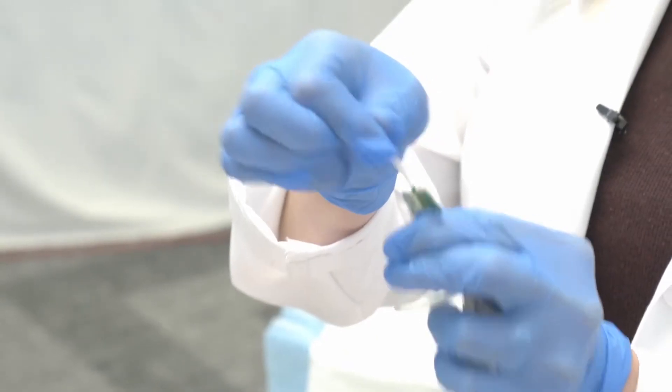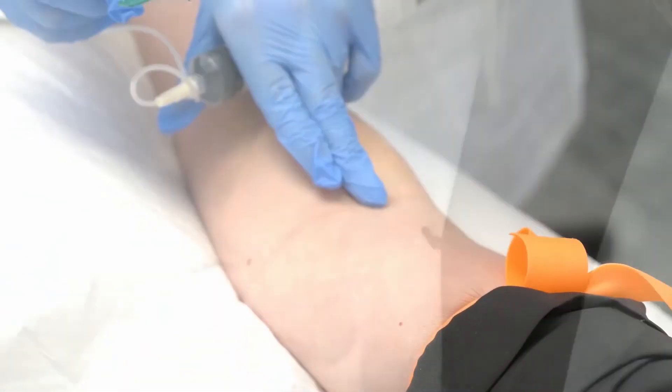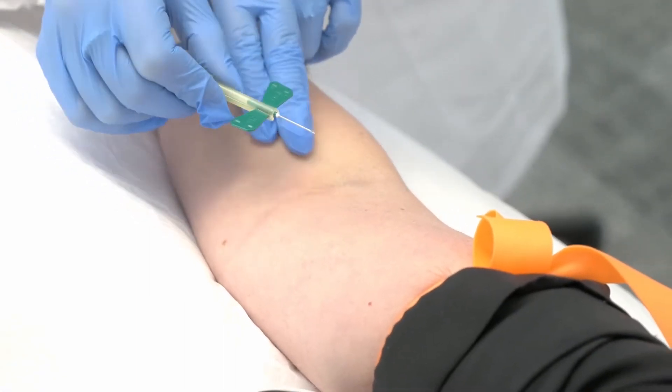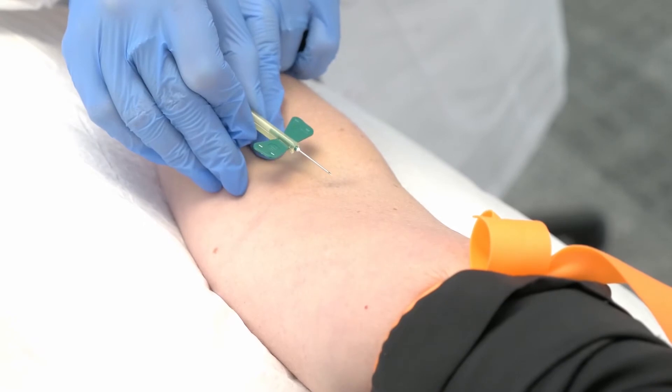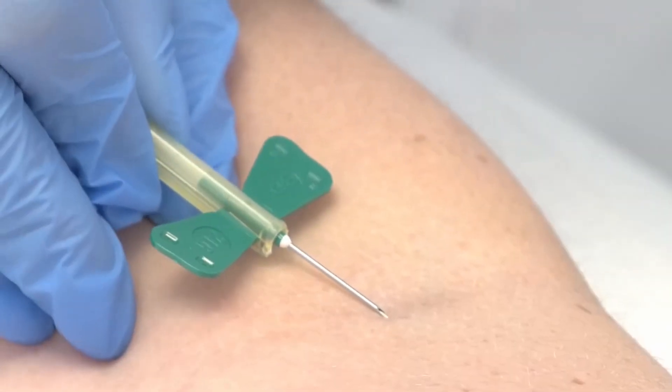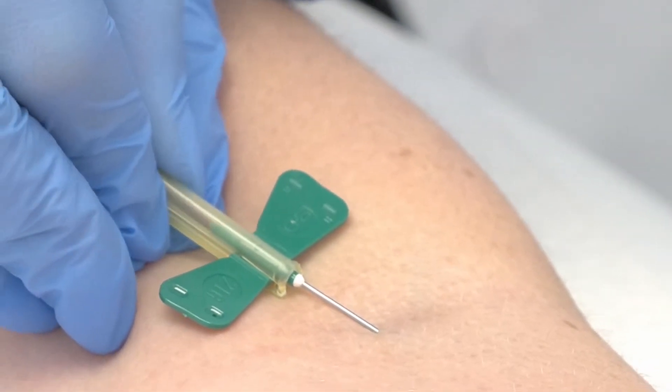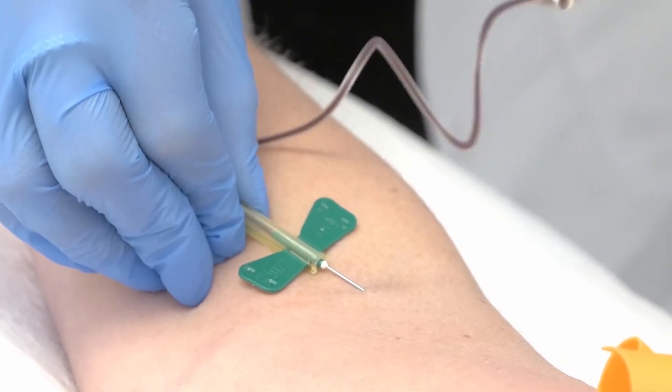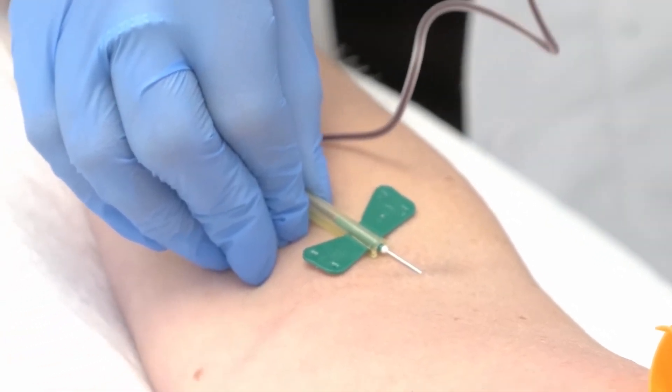Remove protective cap from needle. Pull the skin tight using your non-dominant hand. Insert the butterfly venipuncture, bevel up. You will see a flash of blood in the tubing once you have punctured the vein. An optional step here is to use the micropore tape to tape the butterfly to the patient's arm.